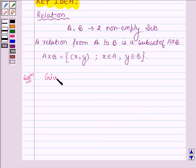And we are given a relation R having ordered pair (x, x³) such that x is a prime number less than 10.